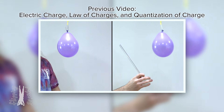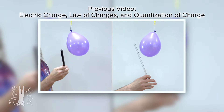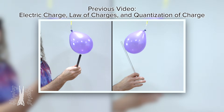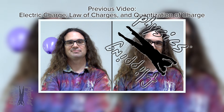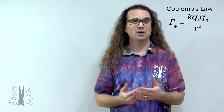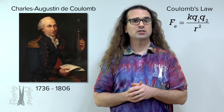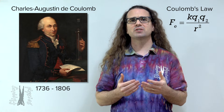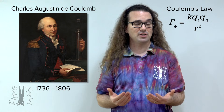Good morning. We have already learned about the law of charges, which governs the directions of the forces on pairs of charges. Today we learn about the magnitude of that force. This equation is called Coulomb's Law, named for Charles-Augustin de Coulomb, a French physicist who, in 1785, published several papers detailing his experimental determination of this equation.